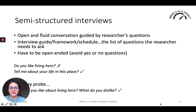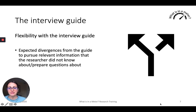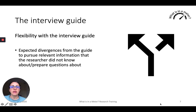We may also probe — for example, 'Tell me about what you like about living here and what do you dislike?' — probing and opening up the question further to get as much of the meanings and perceptions of our interviewee as possible. Because it's semi-structured and not a structured interview, we encourage flexibility. We can deviate from the expected questions in the guide in order to pursue relevant information that the researcher may not have known about or considered important, which then comes up in the discussion. The semi-structured interview process allows the researcher to go into a particular matter, ask a little bit more, and then come back to the original list of questions.